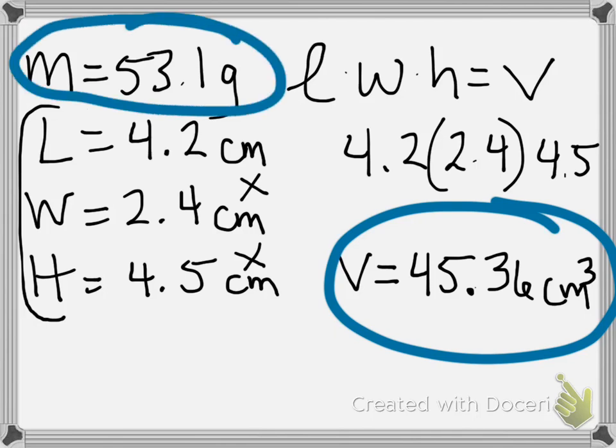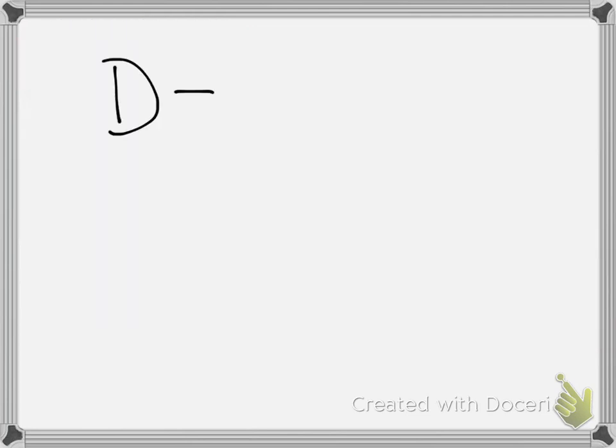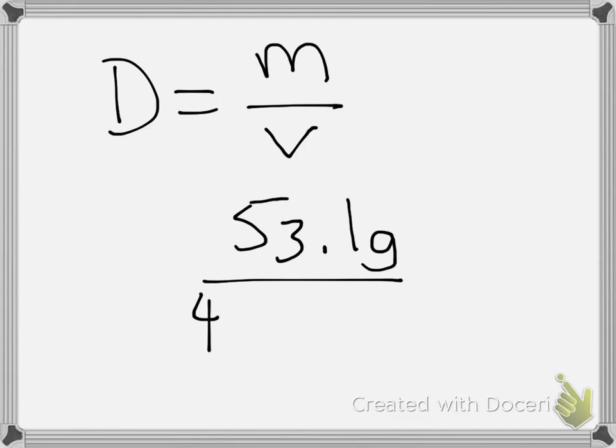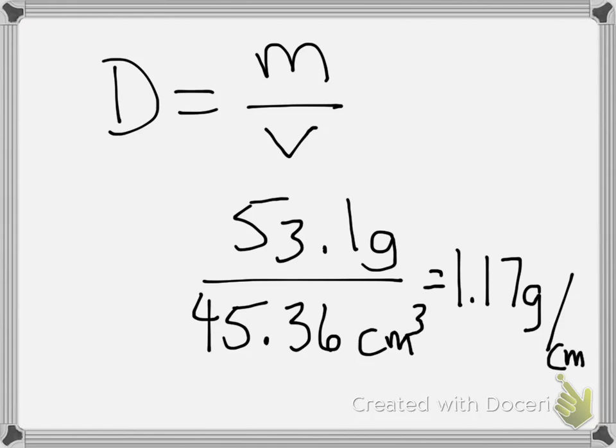I can plug it in to my density formula. So density equals mass over volume, so my mass was 53.1 grams, and my volume was 45.36 centimeters cubed, which gives me, once I put that into the calculator, 1.17 grams per centimeters cubed.